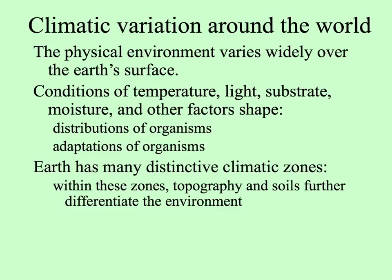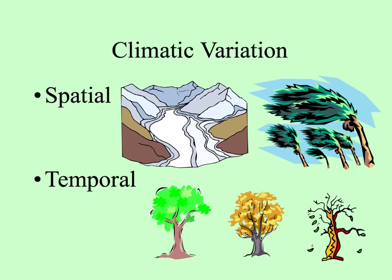Within each zone, topography — that is, features of geology, elevation, and soil types — further causes differentiation of the environment and the species that can live there. Variation in climate can be both spatial, depending where you are on the surface of the Earth, and temporal, changing over the seasons of the year or even over the course of a day.